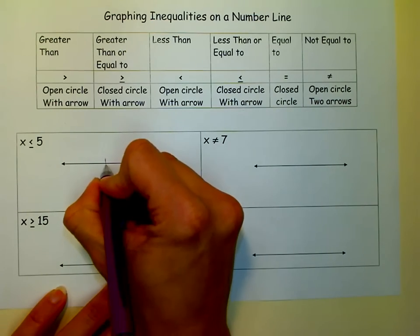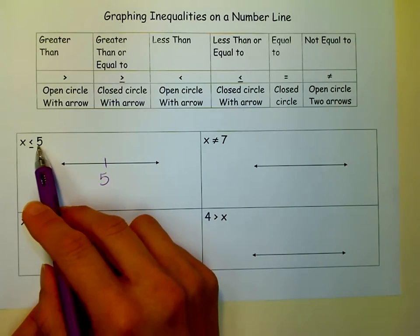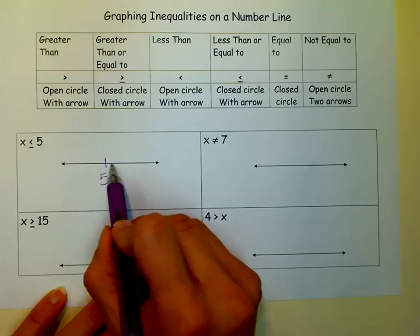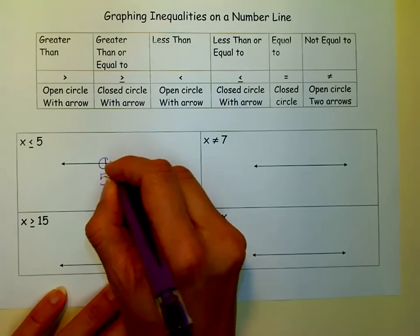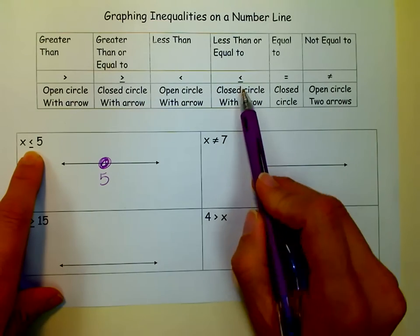I always just like to put whatever number that my solution suggests right in the middle. Sometimes teachers make you do a couple different numbers. I just like to put it right in the middle. Closed circle, because the less than or equal to says closed circle. One arrow.